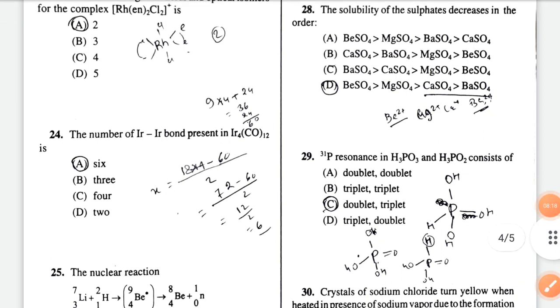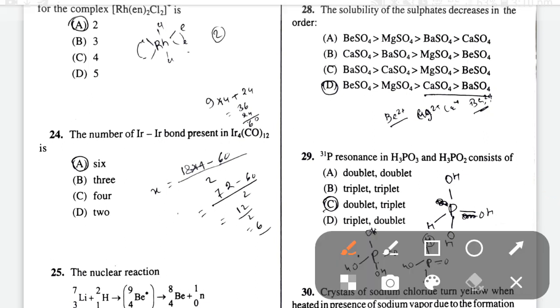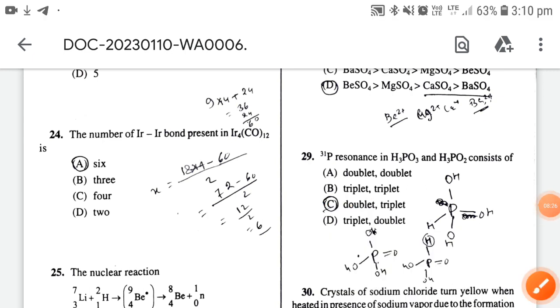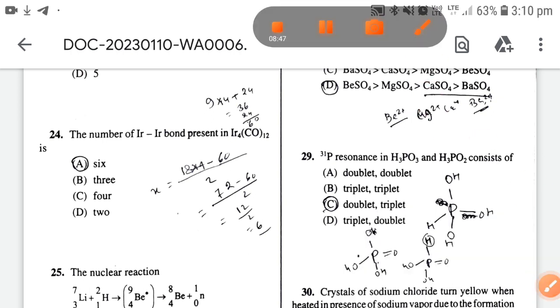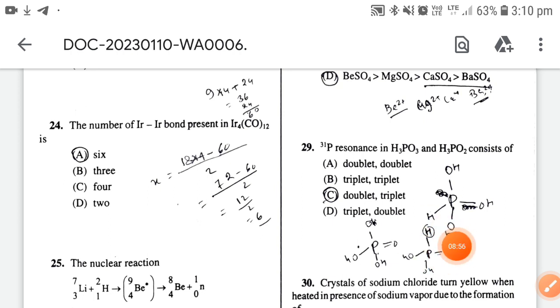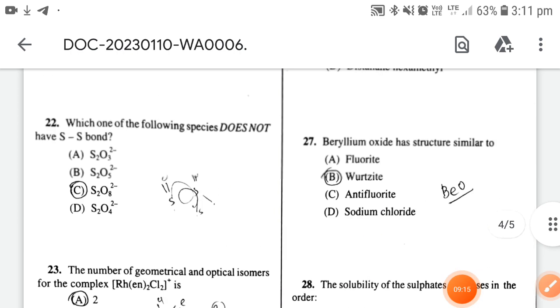³¹P resonance in H₃PO₃ and H₃PO₄ consists of - the correct option is option C. You can see the structure here: in H₃PO₃, one phosphorus is attached and one hydrogen is there, so phosphorus is splitting with hydrogen and a doublet occurs. In H₃PO₄, a triplet occurs. Sorry, one minute.